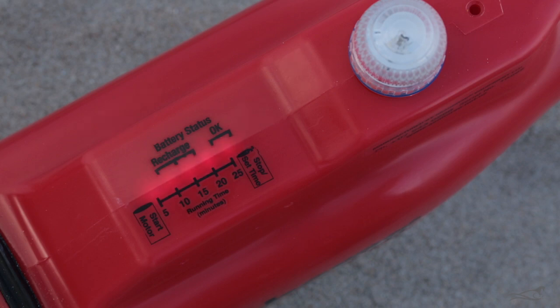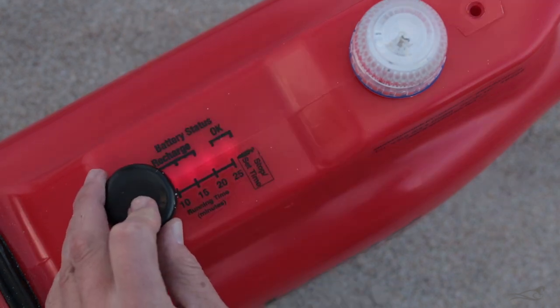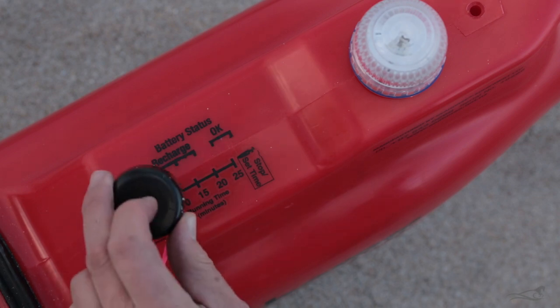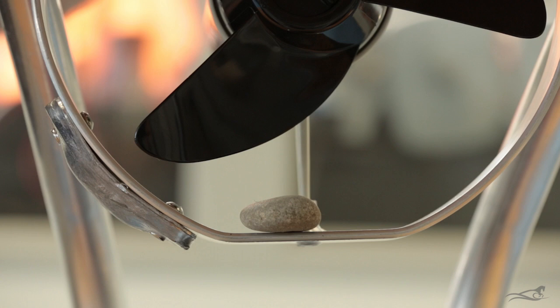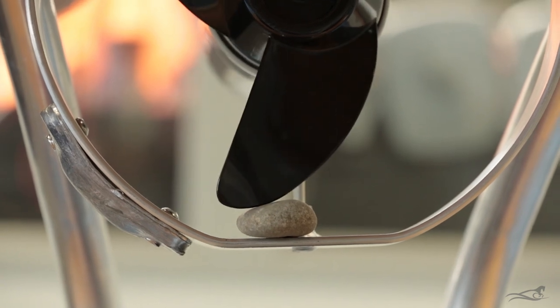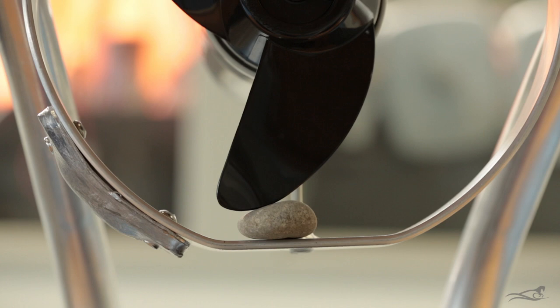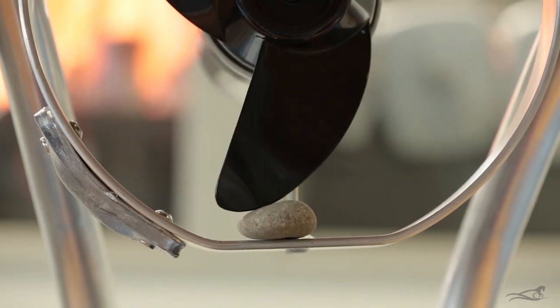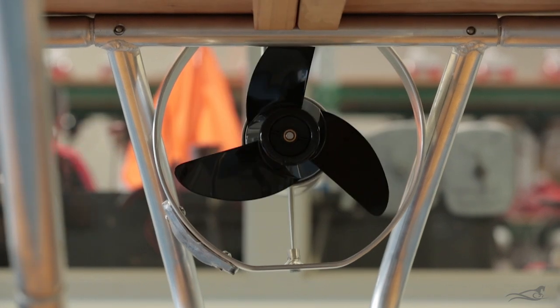The control unit on the Standard Seahorse will show you your battery status, whether your batteries are charged or need recharging. It allows you to set your run time, and for the 46lb thrust Seahorse, it allows you to select either fast or slow speed. The control unit also has built-in stall protection, so if something gets caught up in the prop and stalls the motor, the control unit will stop and start the motor three times to try and free the obstruction and continue fishing.